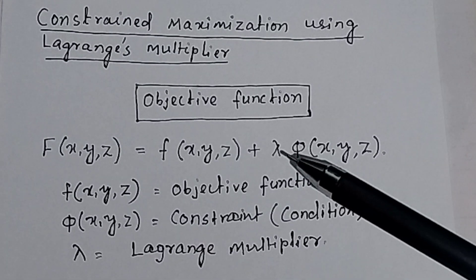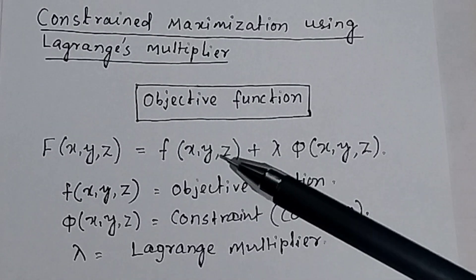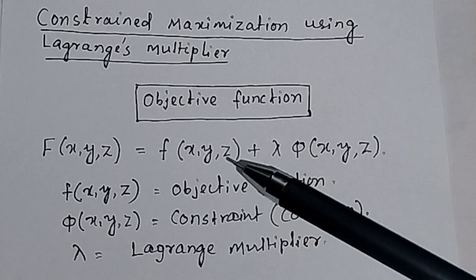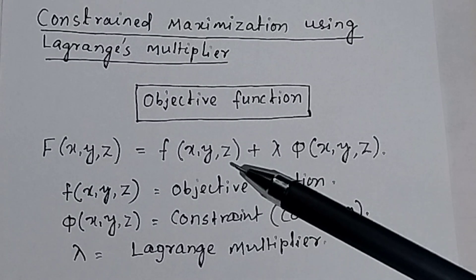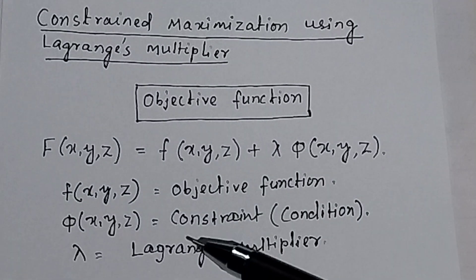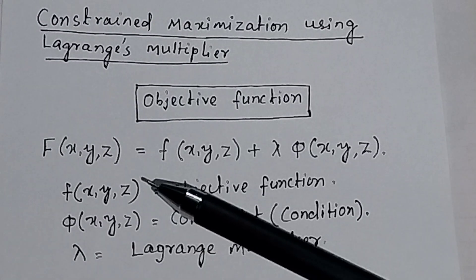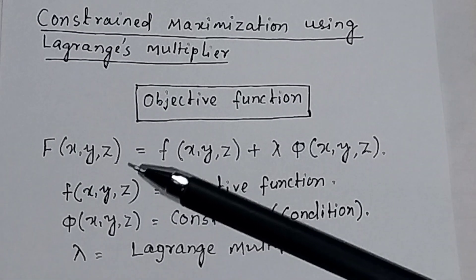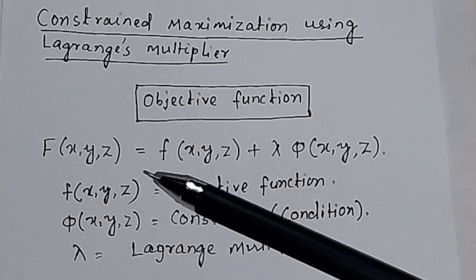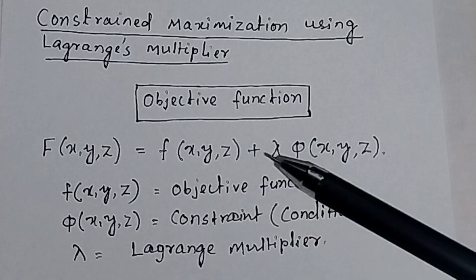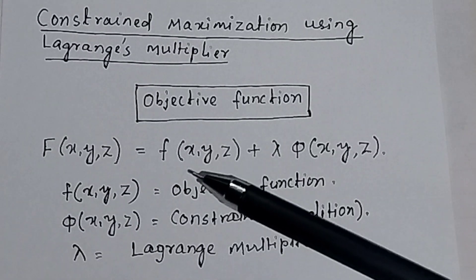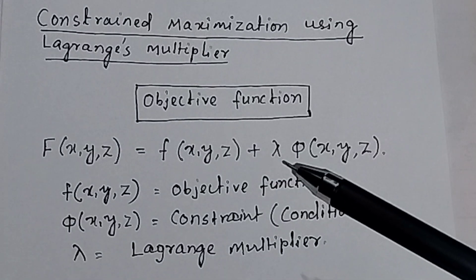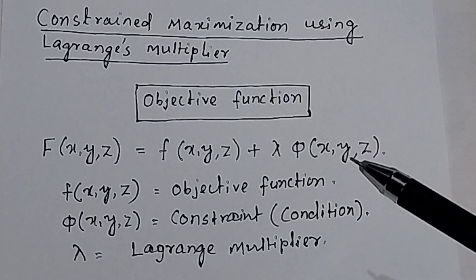In constraint maximization of any objective function, we need to find the maximization or minimization of the function, and for that we apply the Lagrange multiplier method. The Lagrange function f is equal to the objective function plus the Lagrange multiplier multiplied by the constraint condition function.